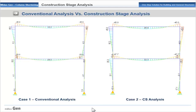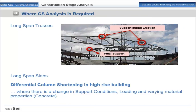These moments, if within limits, can be compensated with more reinforcement — usually considered in short structures. But for high-rise structures the moments go higher, and thus a necessity of performing column shortening analysis arises. The compensations are then in the form of increasing the heights of vertical elements. Construction stage analysis is also required for long-span trusses where boundary support conditions change during erection, as well as in bridges, long-span slabs, and for differential column shortening in high-rise buildings — in short, wherever there is change in support conditions, loading, and varying material properties.